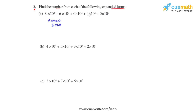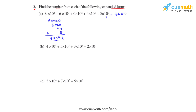Next, we have 4 times 10 raised to 1, so that is 4 followed by 1 zero. Then we have 5 times 10 raised to 0 — anything raised to 0 is 1, so it will be 5 itself. Now we add all the numbers, since the number was in expanded form with addition. We get the final answer as 86045. So the number for part a is 86045.